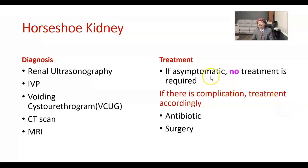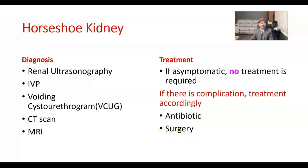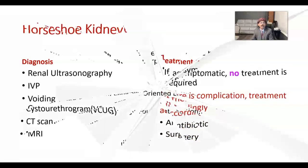Treatment: it does not need treatment if there is no symptom. A person can have a normal life span with horseshoe kidney, as it may be totally asymptomatic. If it is symptomatic with complications, treatment is given accordingly — antibiotics in case of infection, and surgery if there is an obstruction, depending on the situation.